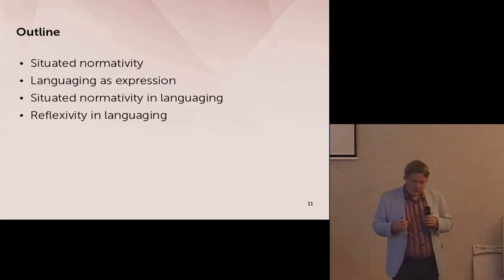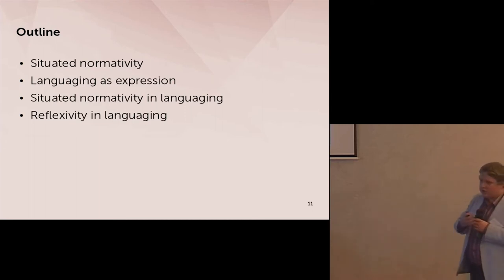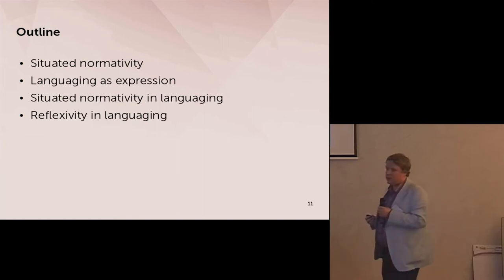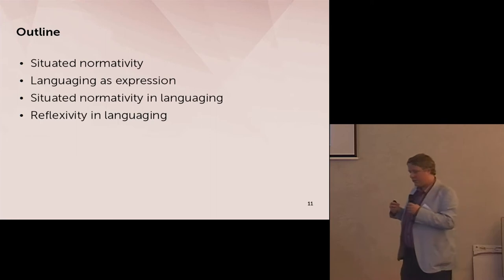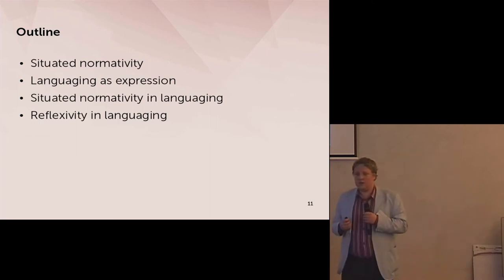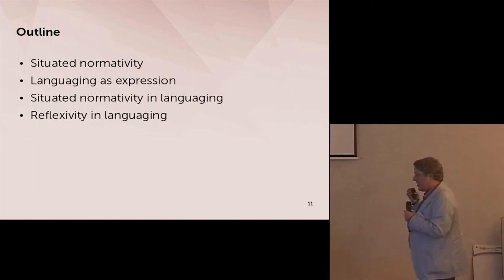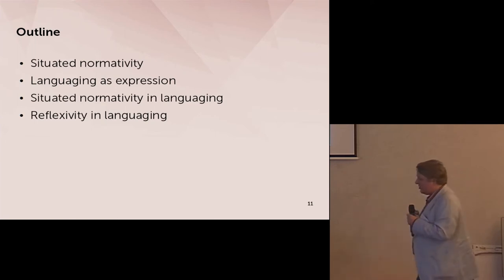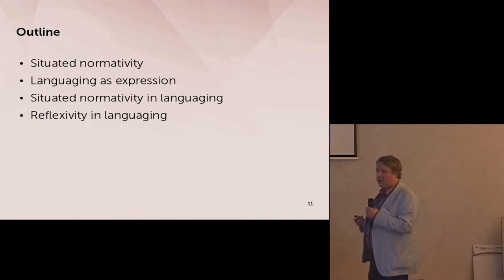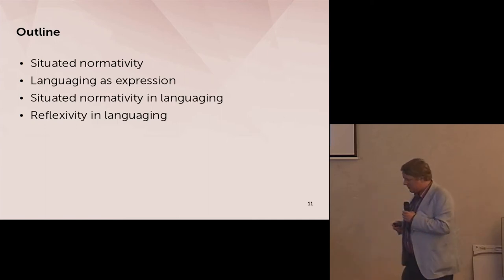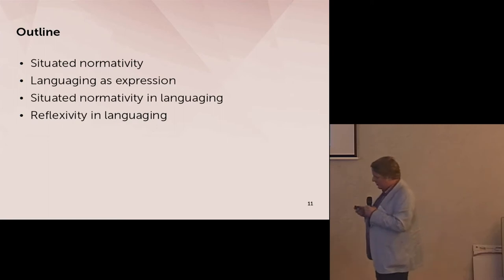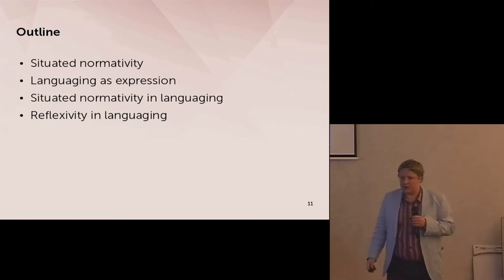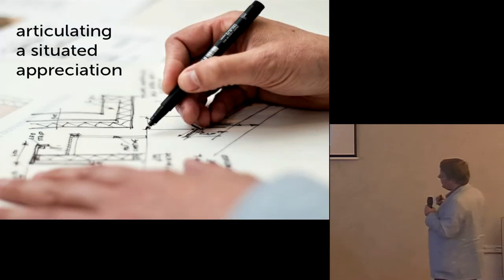Bringing together these two notions — on the one hand, situated normativity, and on the other hand, language as expression — what can be noticed is that both place expressive behavior center stage. They don't start from an idea of private rules or representations, but instead they start from an idea of sensitivity to situations, which is expressed in normative behavior or in languaging behavior. This brings me to the third part of the talk, in which I discuss two examples by Wittgenstein and see how the two come together.